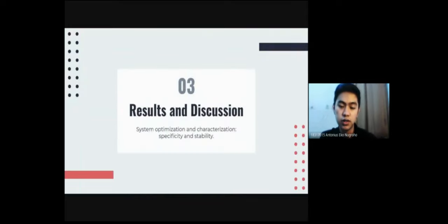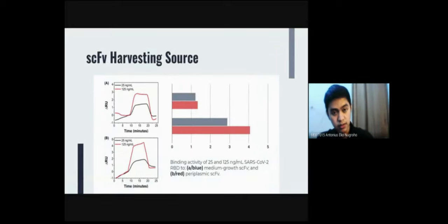And here is our results. So in comparing the performance of SCFV from different harvesting source, we got the graph A and the blue bar which represents the performance of the medium growth SCFV and the graph B and the red bar to show the periplasmic SCFV performance. And from these results, we conclude that the periplasmic SCFV is the better one.